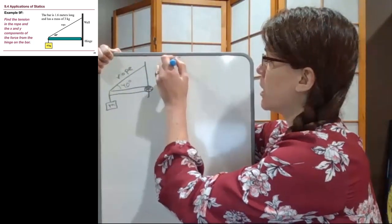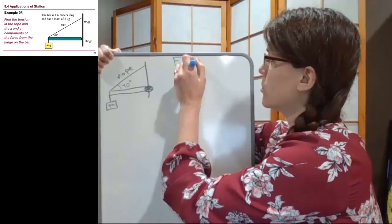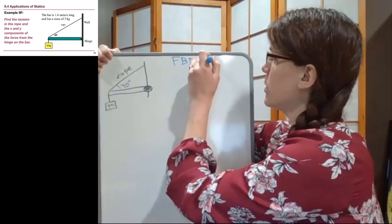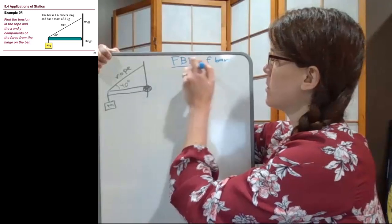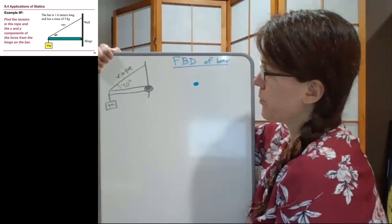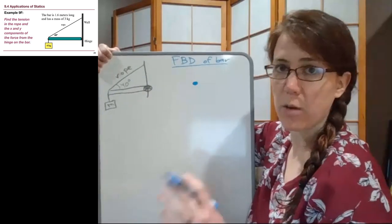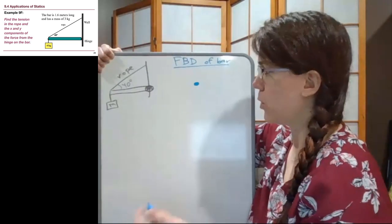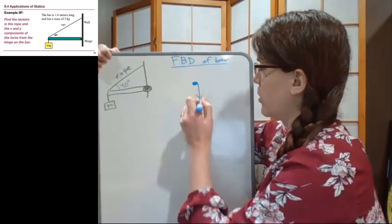So we need to look at the forces on the bar, so we're going to draw the free body diagram of the bar, and so this we need to be a little bit careful of. So first of all, let's start with gravity. That one's easy enough for us to be aware of and think about.